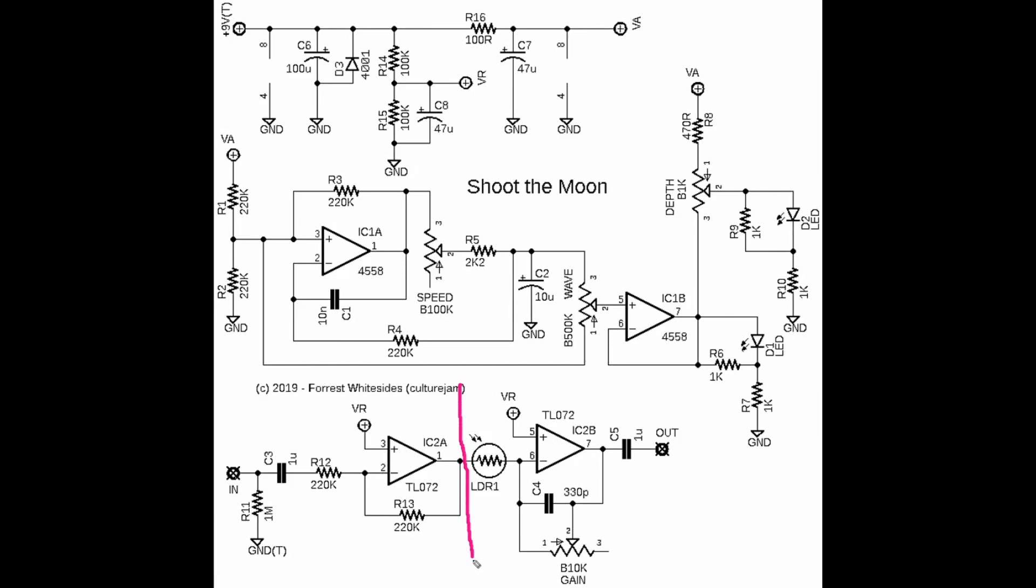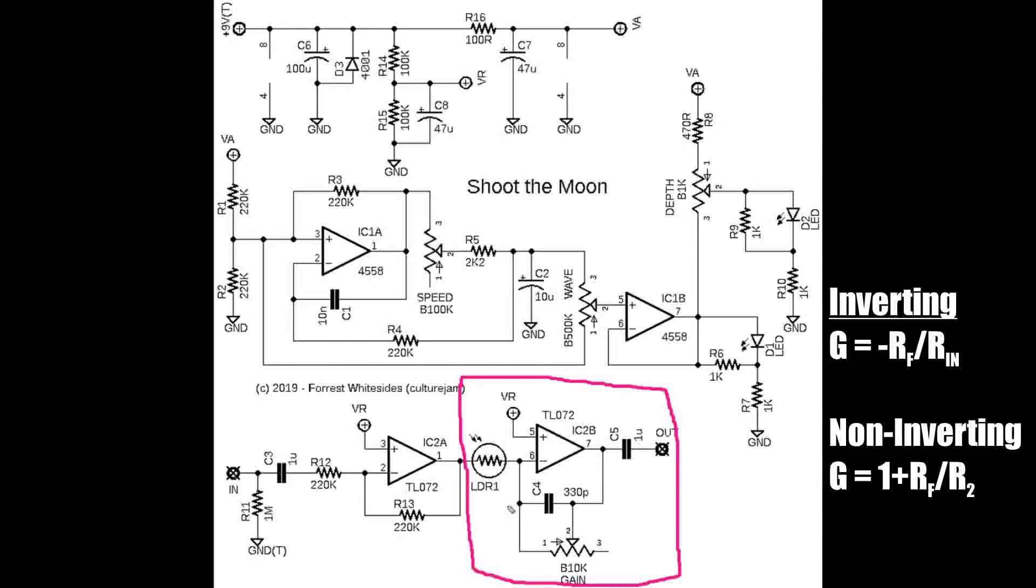Then we have another op amp gain stage right here. And this again is an inverting op amp stage so that the output will be in phase with our input. But the great thing about an inverting op amp gain stage is that an inverting stage can have a gain factor of less than one. A non-inverting op amp stage will always have a gain of at least one, but inverting, you can go to a gain of zero.